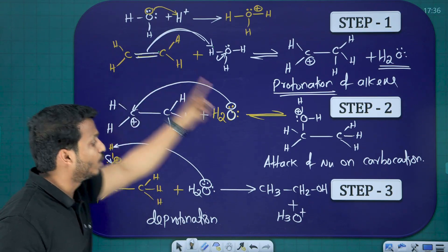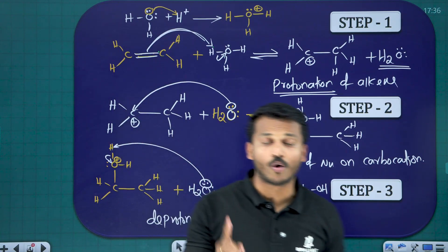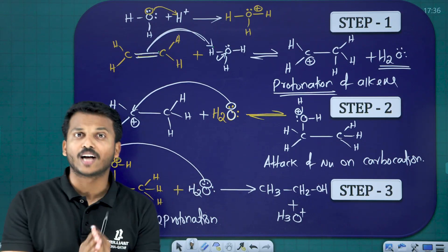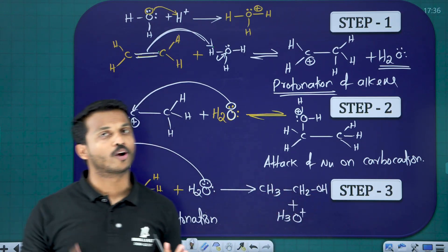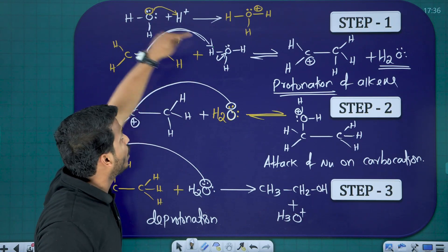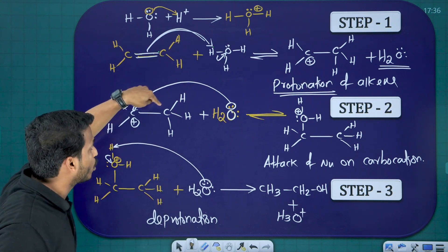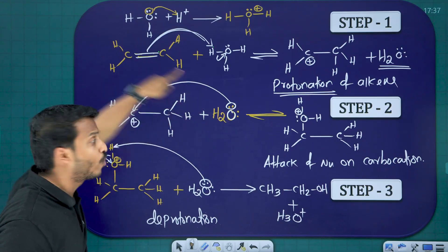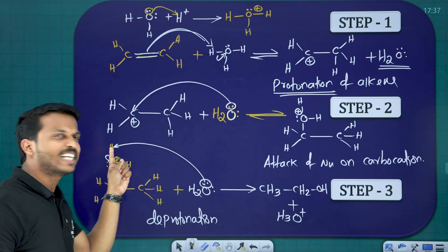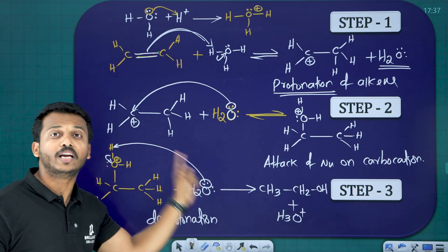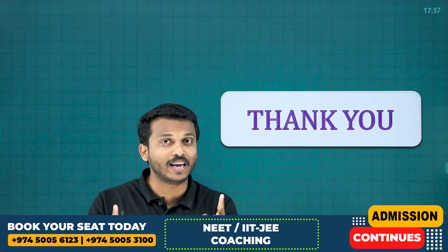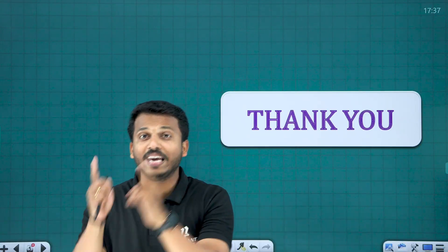So this is how you convert ethene to ethanol. This is the mechanism for the acid catalyzed hydration of alkene to alcohol. To recap: step one, the alkene reacts with hydronium ion, taking H⁺ — called protonation. Step two, H₂O as nucleophile attacks the carbocation — called attack of nucleophile on carbocation. Step three, the extra H⁺ is removed by H₂O — called deprotonation. This completes the mechanism for acid catalyzed hydration of alkene to alcohol, specifically ethene to ethanol.